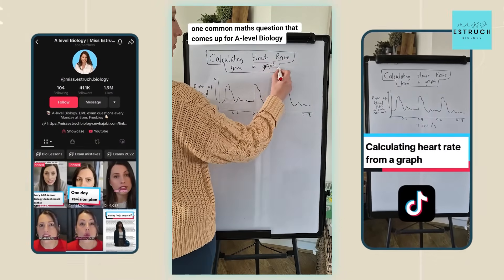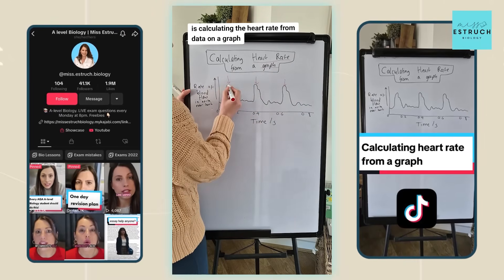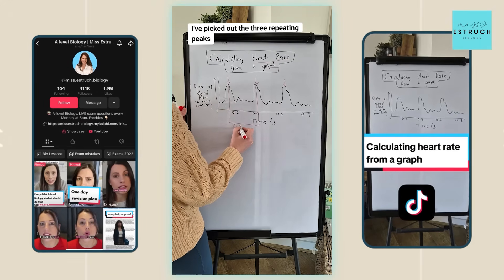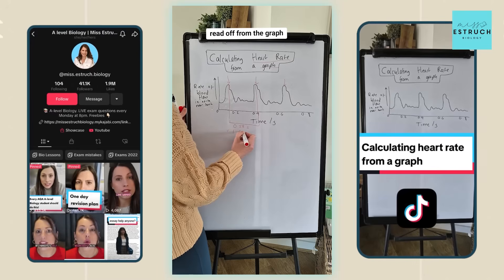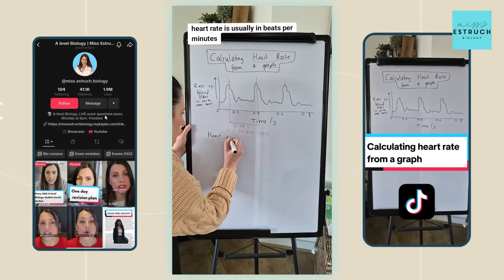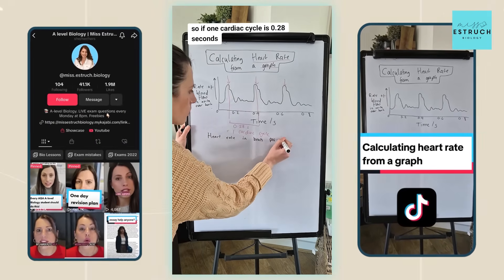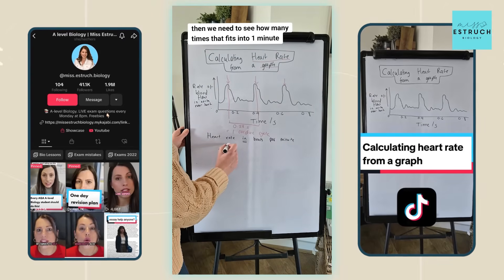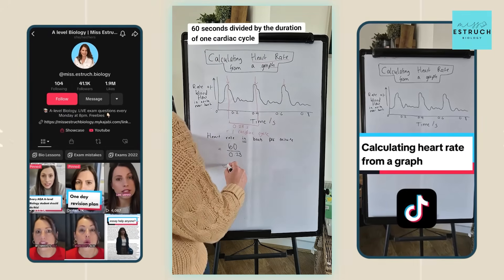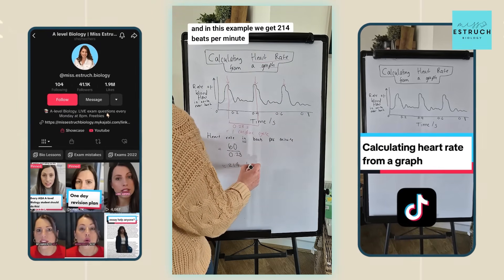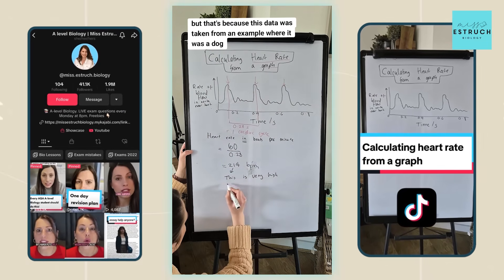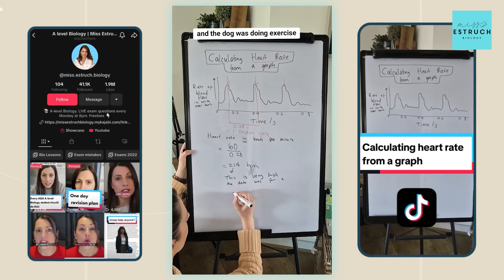One common maths question for A-level biology is calculating heart rate from graph data. Look for repeating patterns — for example, three repeating peaks indicate one cardiac cycle. Read off the duration of one cardiac cycle from the graph; in this example it's 0.28 seconds. Heart rate is usually in beats per minute, so calculate how many times that duration fits into one minute: 60 ÷ 0.28 = 214 beats per minute. That's a high heart rate, but this data was taken from a dog doing exercise. Always check your answer is reasonable.